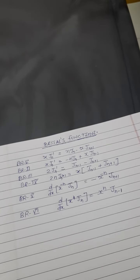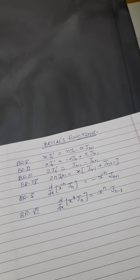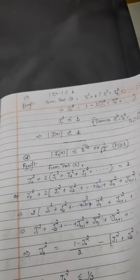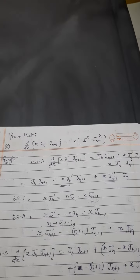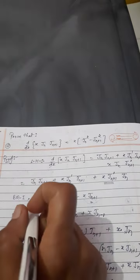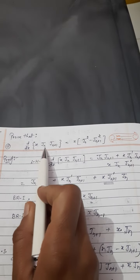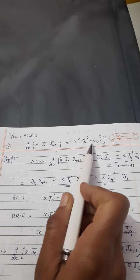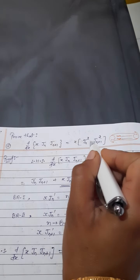ये सबसे पहले recurrence relations थे। अब इन पर based questions solve कर रहे हैं। Next question में we will prove that d/dx[x·Jn·Jn+1] = x·(Jn² minus Jn+1²).